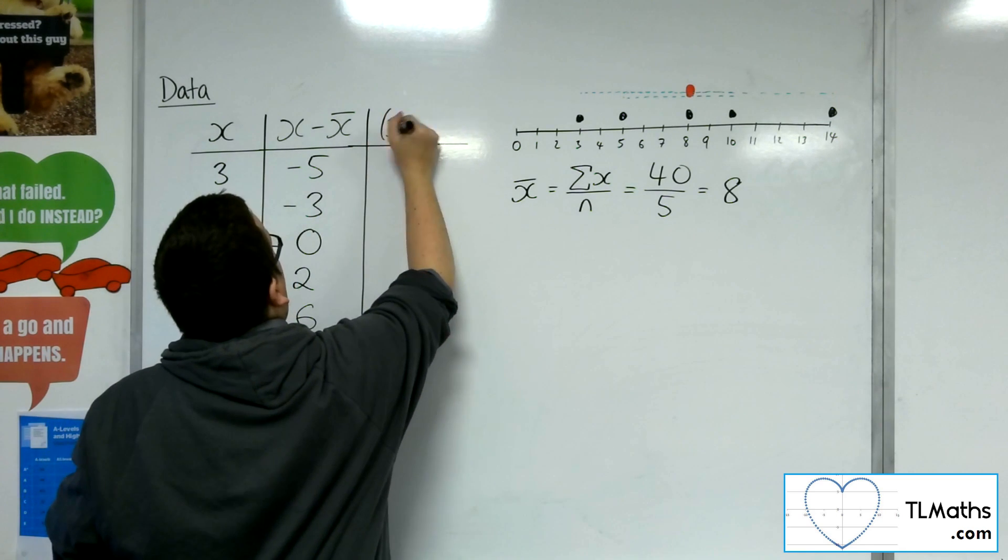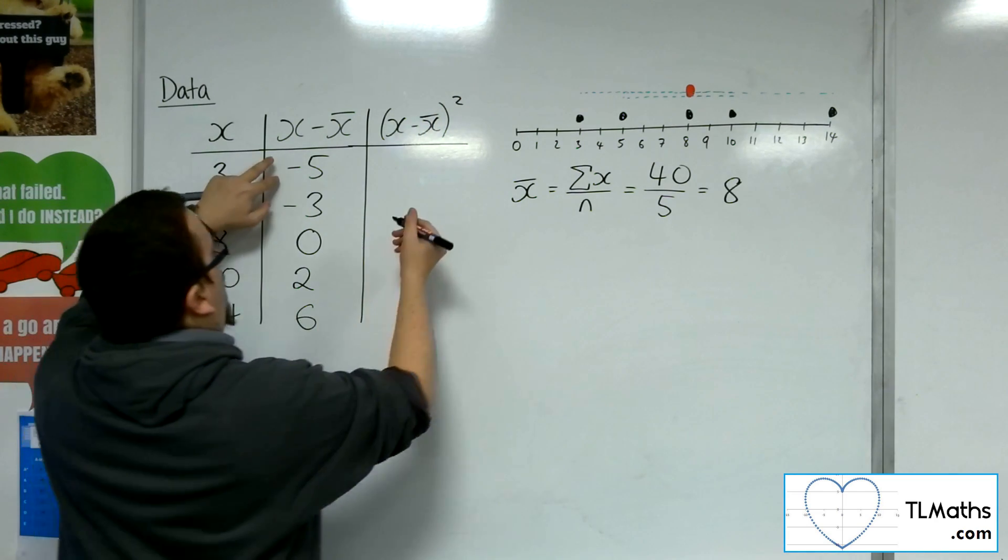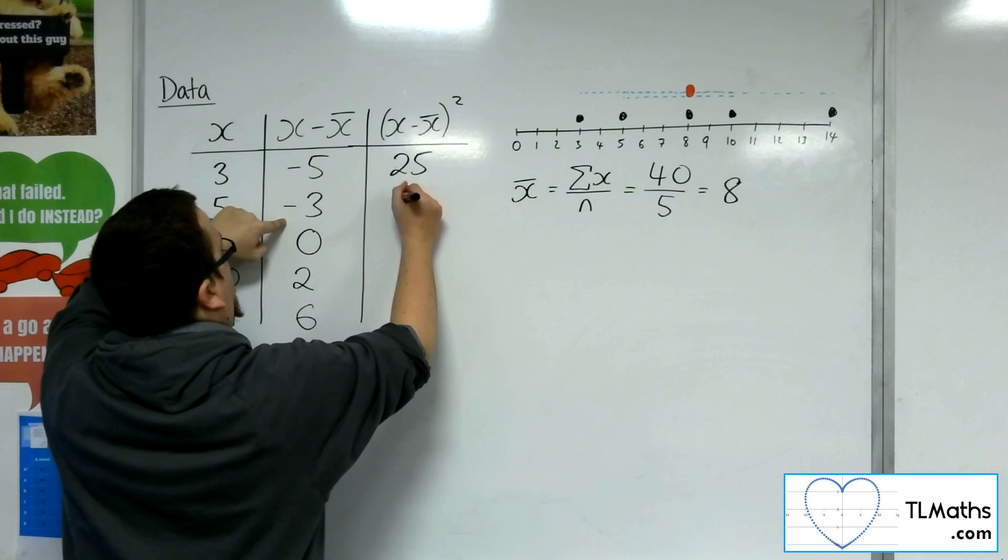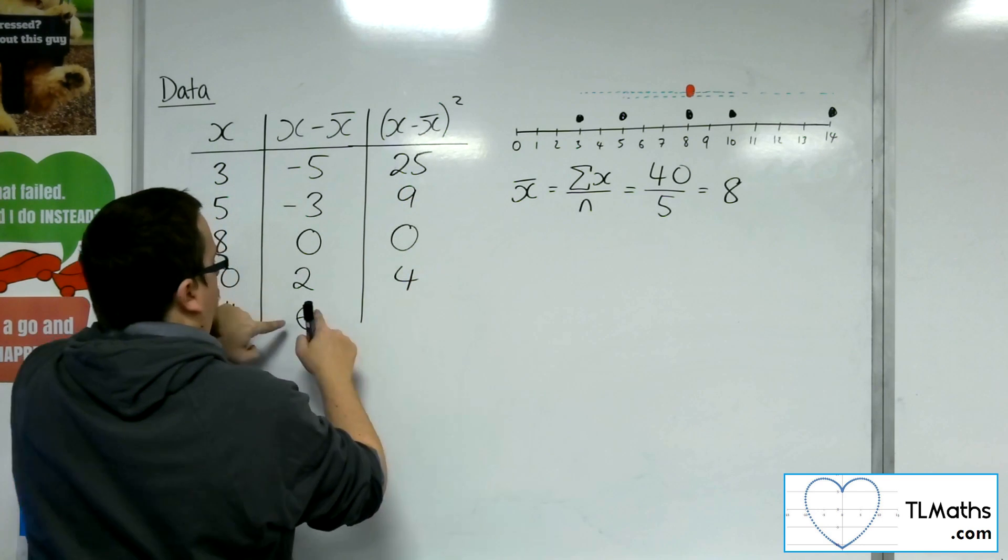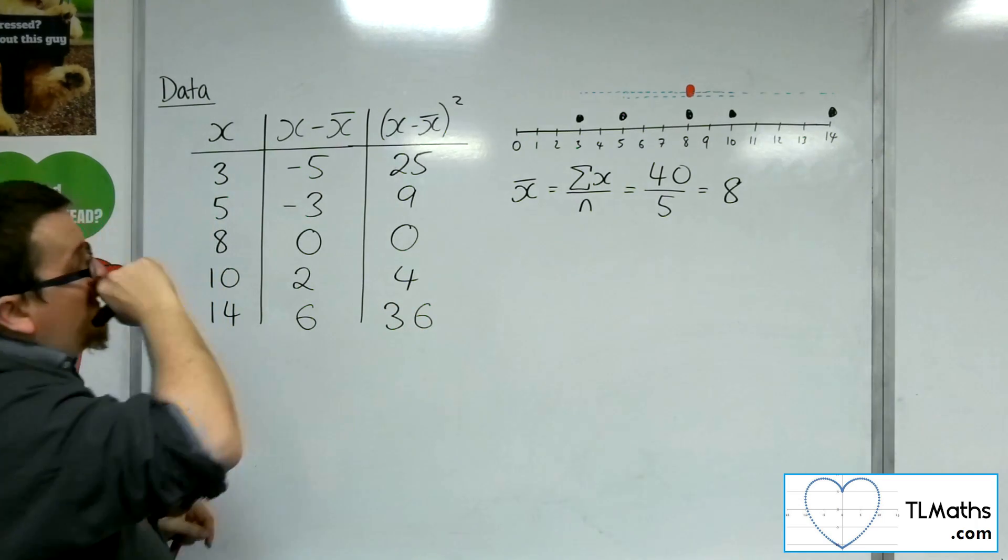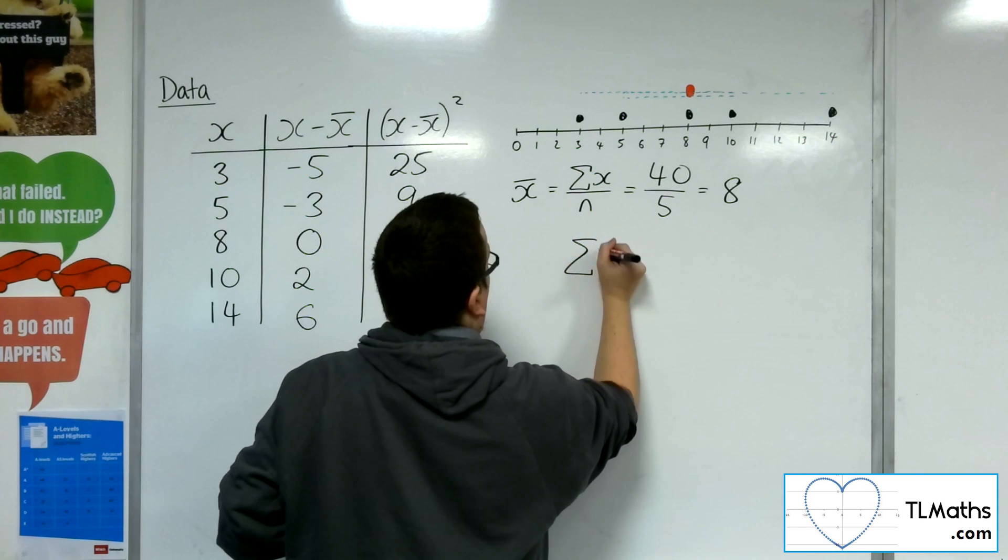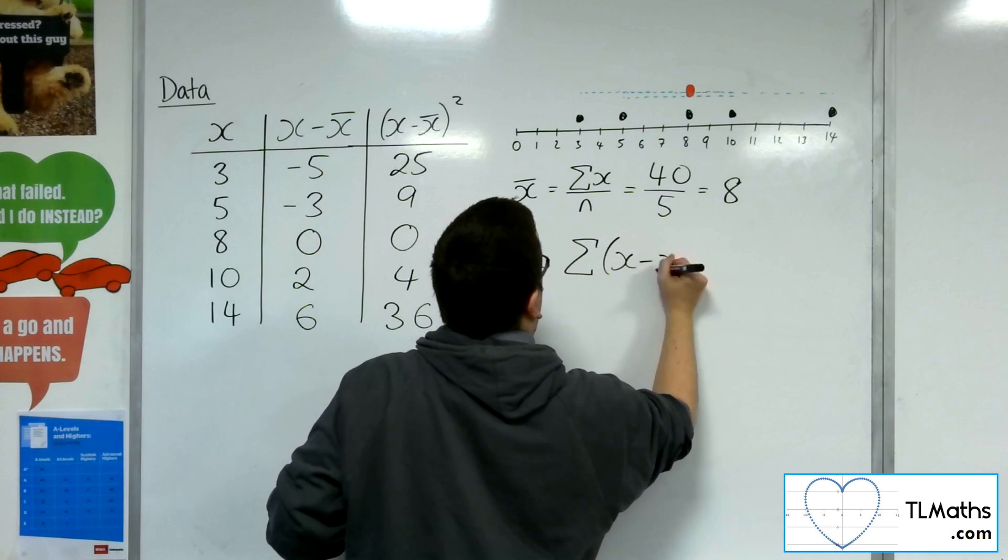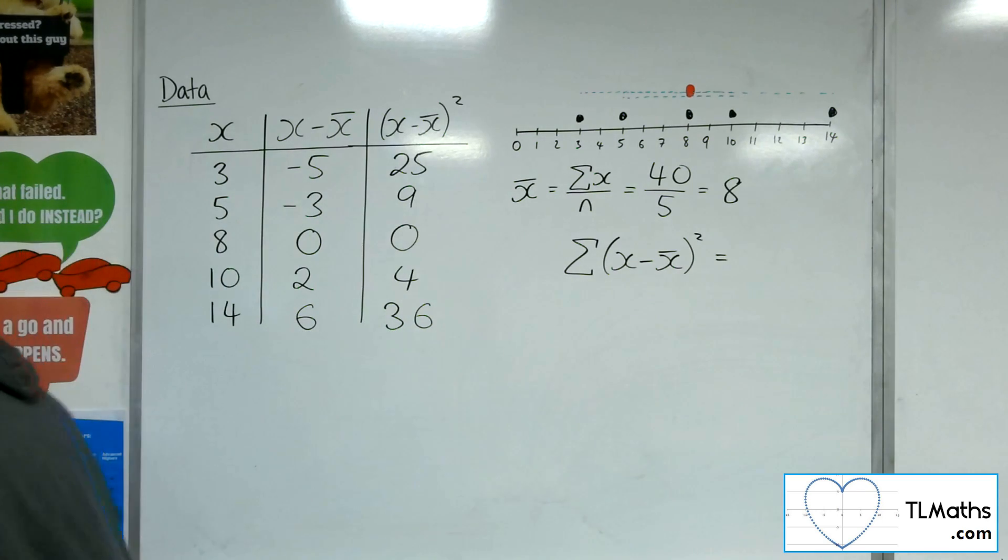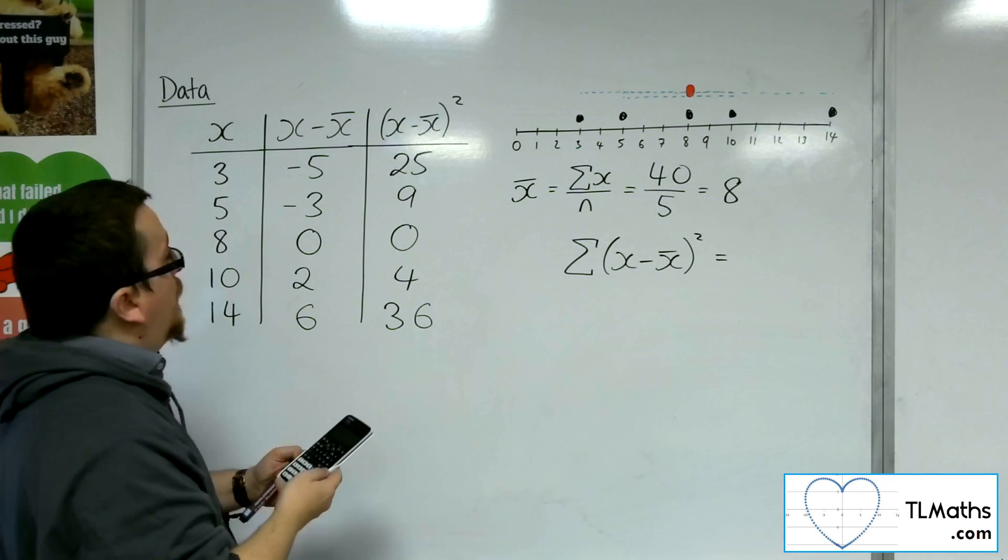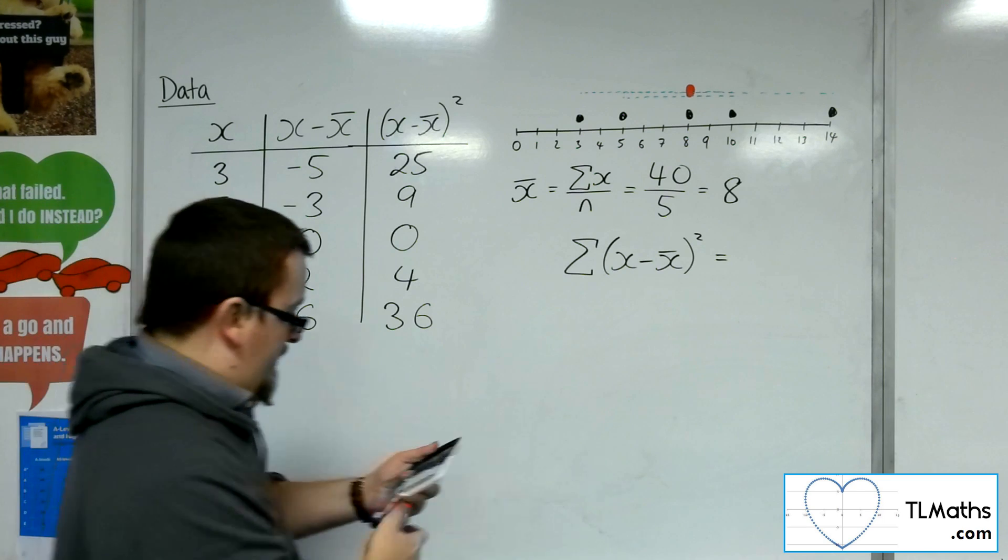then an easier way is actually to square all the numbers, because that will always make a number positive. So I'm going to square each of those. So I'm going to have x minus x̄ squared. So minus 5 squared is 25, minus 3 squared is 9, 0 squared is 0, 2 squared is 4, 6 squared is 36. And what I want to do is I want to add all of those together.